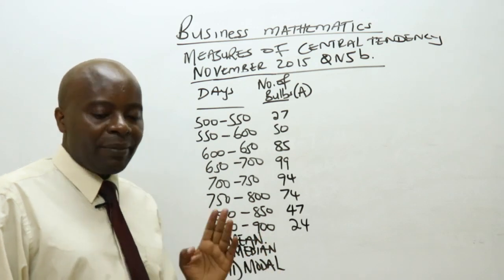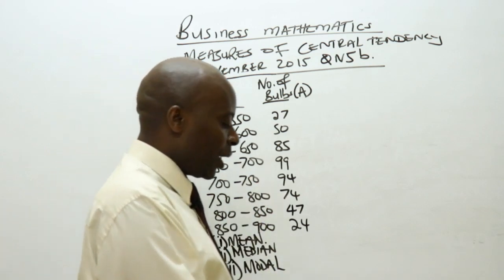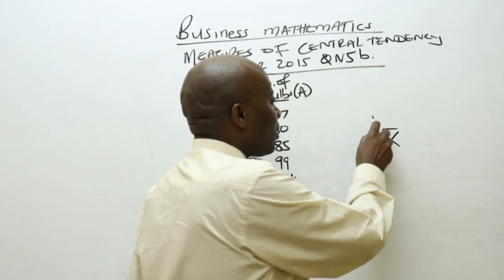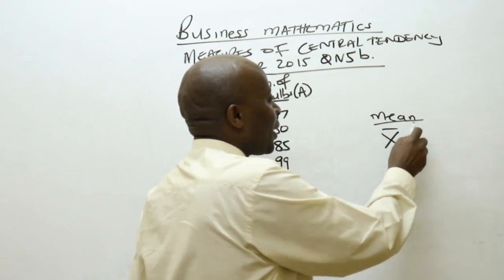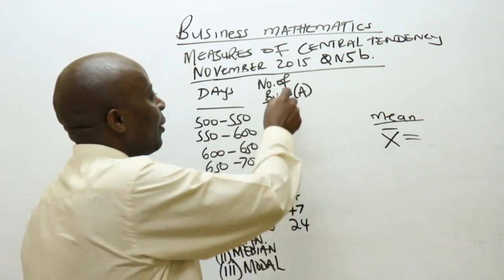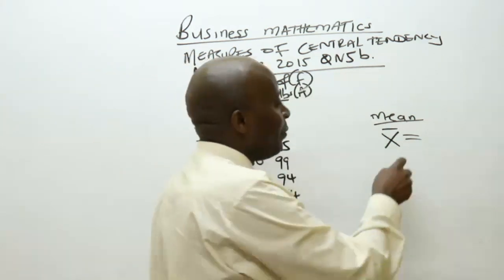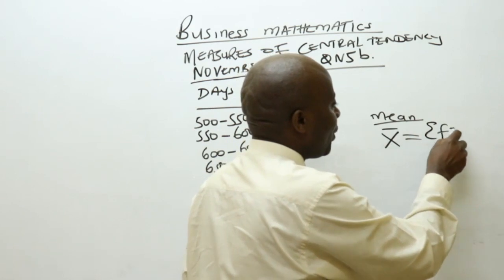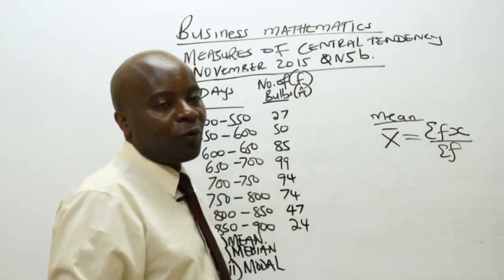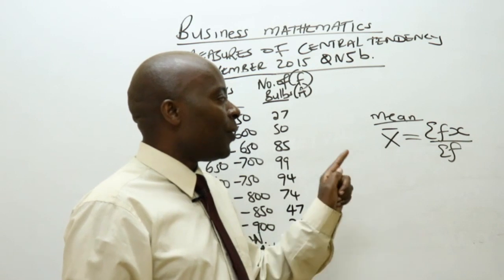We want to start with the mean. How do we get the mean of this kind of distribution? How do we get x-bar? The mean is x-bar. To get x-bar in a frequency distribution, we normally take the summation of frequencies times x, divided by the summation of frequencies.